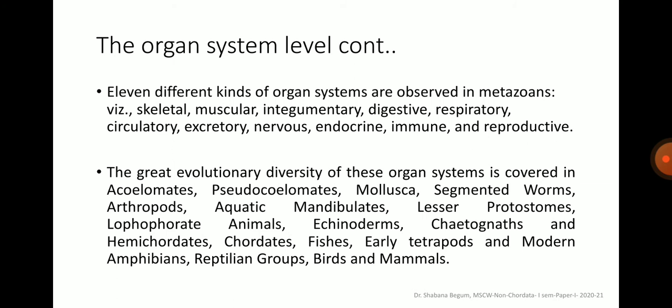The nervous system and endocrine system are called the controlling systems of the body, while the remaining systems are called the working systems of the body. The great evolutionary diversity of these organ systems is covered in acoelomates, pseudocoelomates, molluscs, segmented worms, arthropods, aquatic mandibulates, protostomes, lophophorates, echinoderms, chaetognaths, hemichordates, chordates, fishes, tetrapods and modern amphibians, reptilian groups, birds, and mammals.